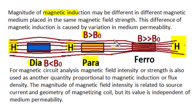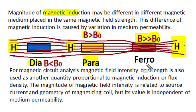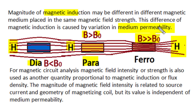In ferromagnetic material, however, the magnetic induction in iron becomes very, very high compared to the flux density in air. This variation of flux density across media compared to air is due to medium permeability. Depending upon medium permeability, the same magnetic field intensity H produces different values of magnetic induction in different media.